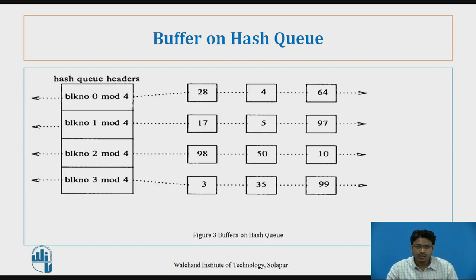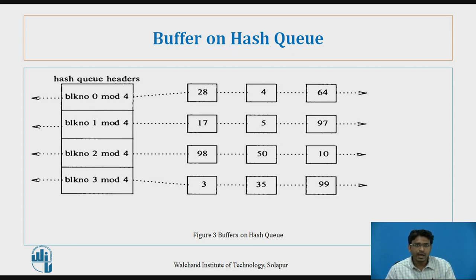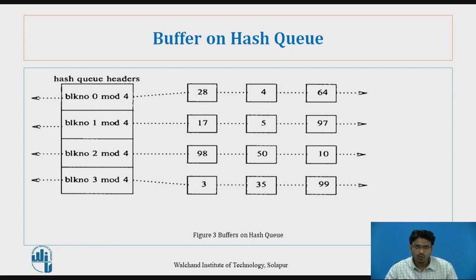Now let's see how we manage these things. In the buffer-on-hash-queue diagram, on the left-hand side we have the hash queue headers for block numbers 0, 1, 2, and 3 — four blocks in total. On the right-hand side we have different buffers with data blocks. Buffers 1, 2, and 3 contain data blocks 28, 4, and 64 respectively.